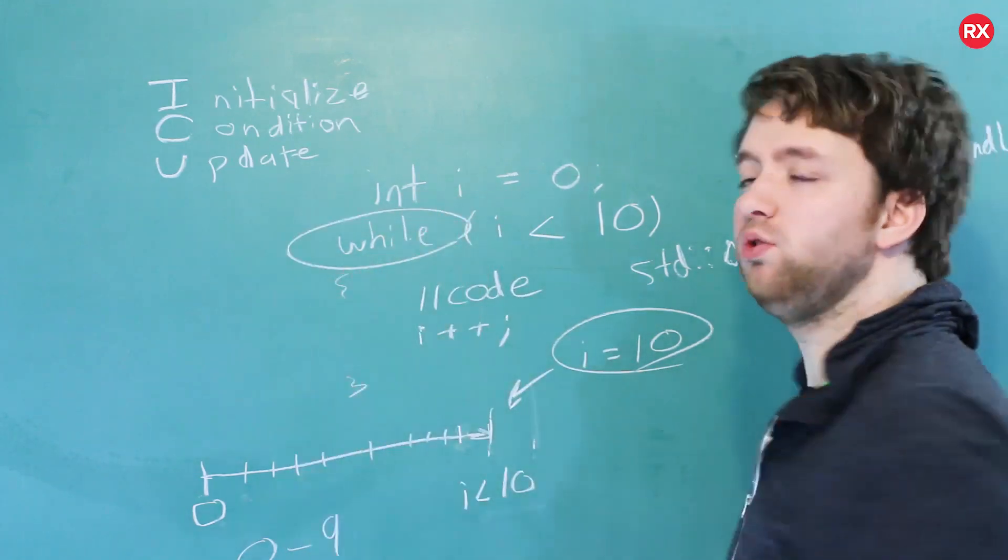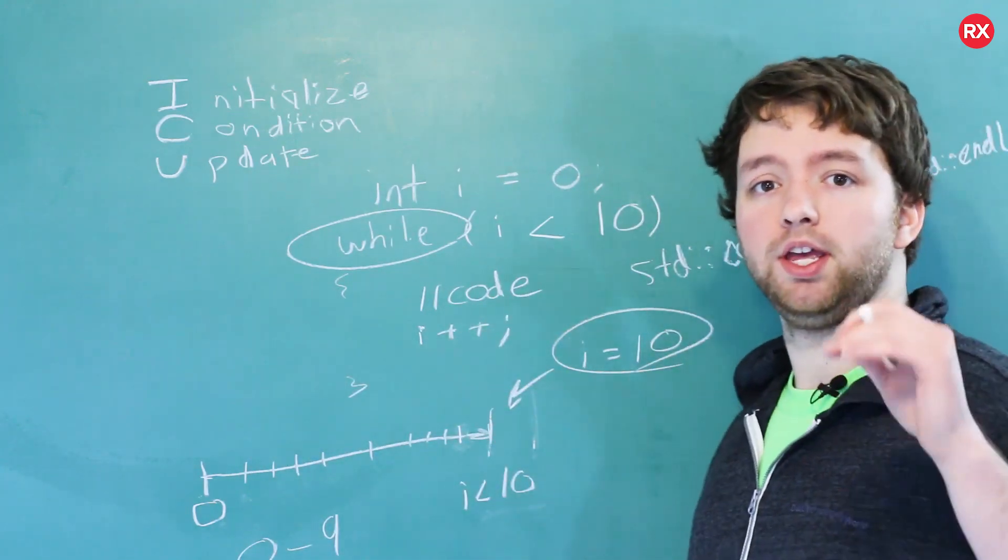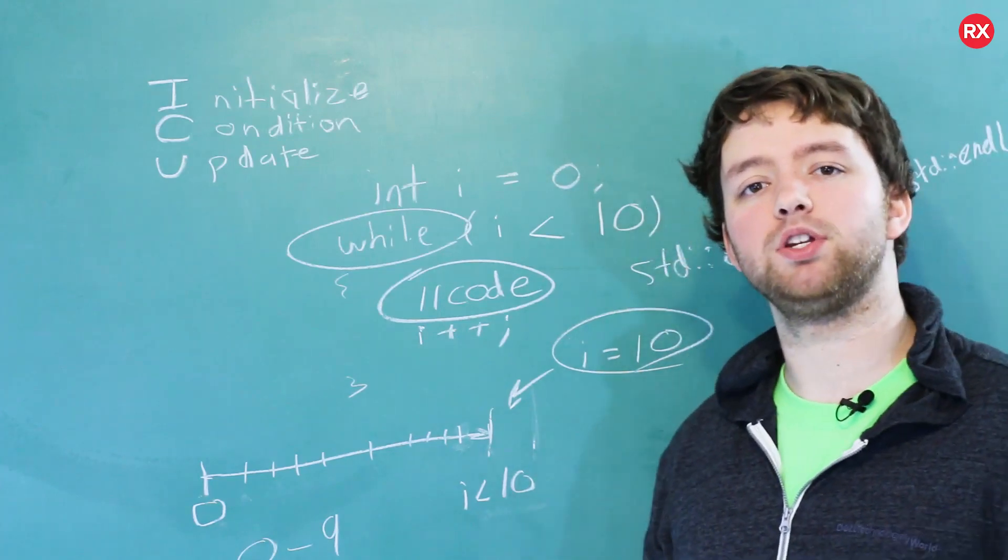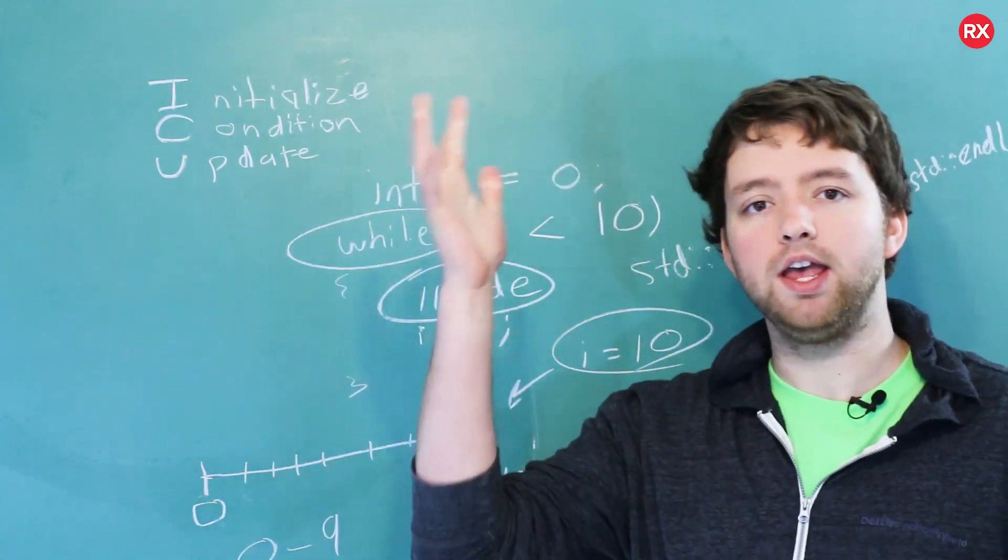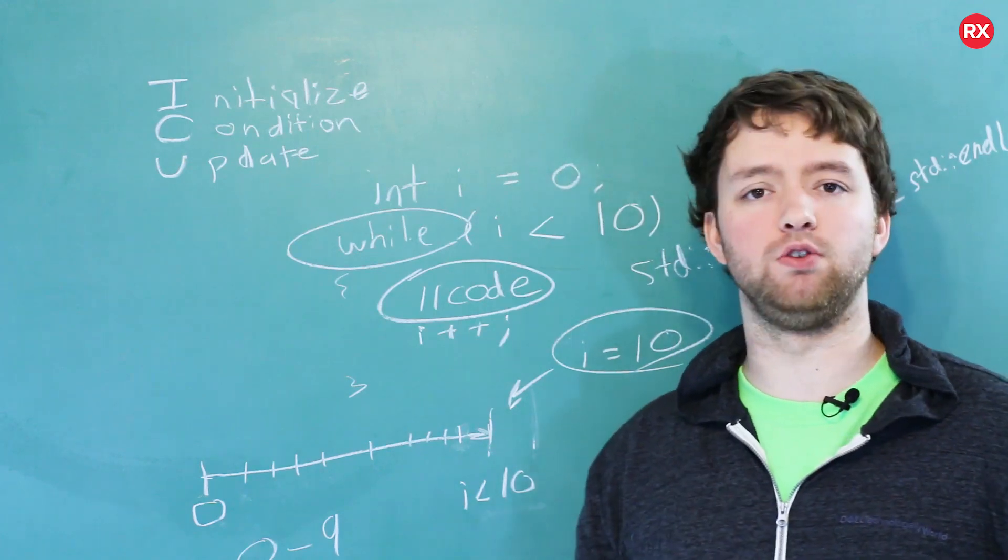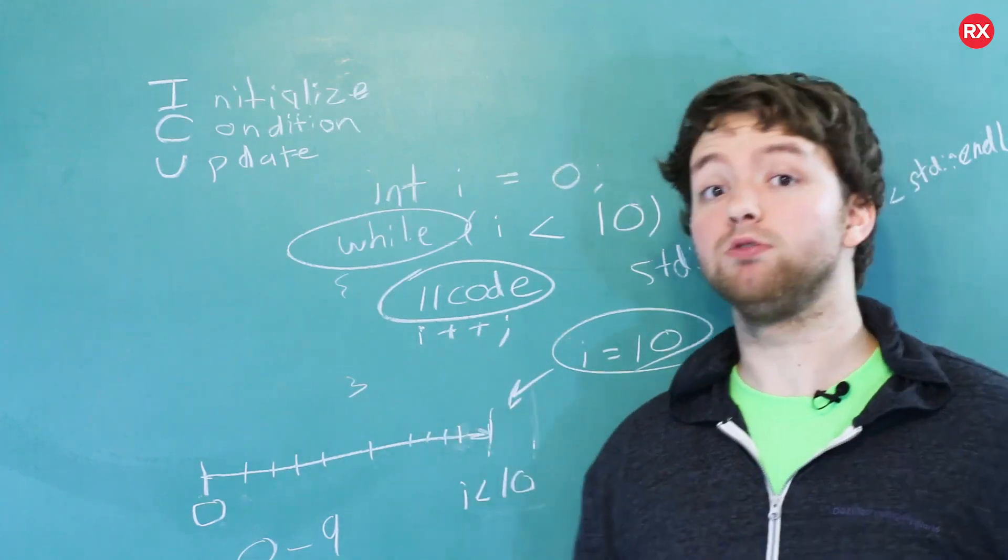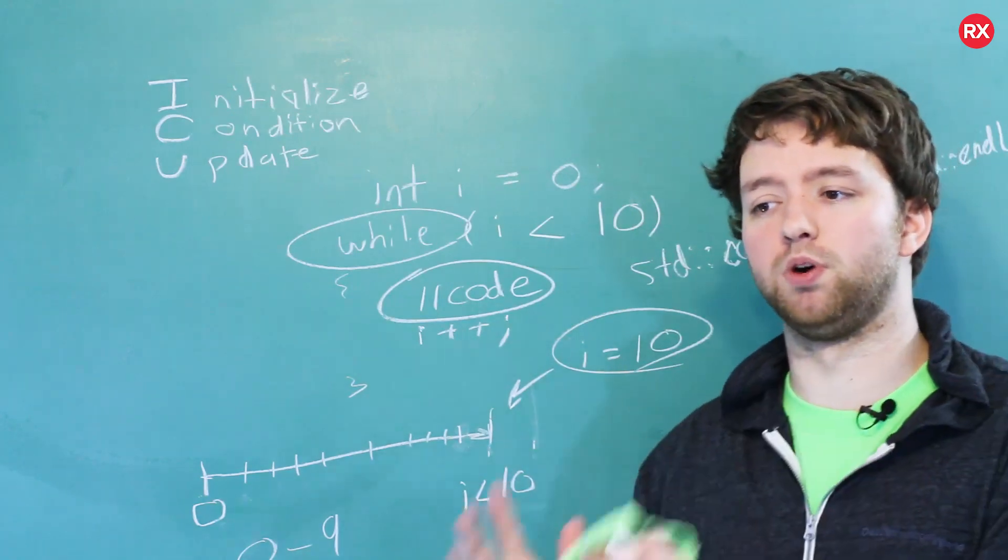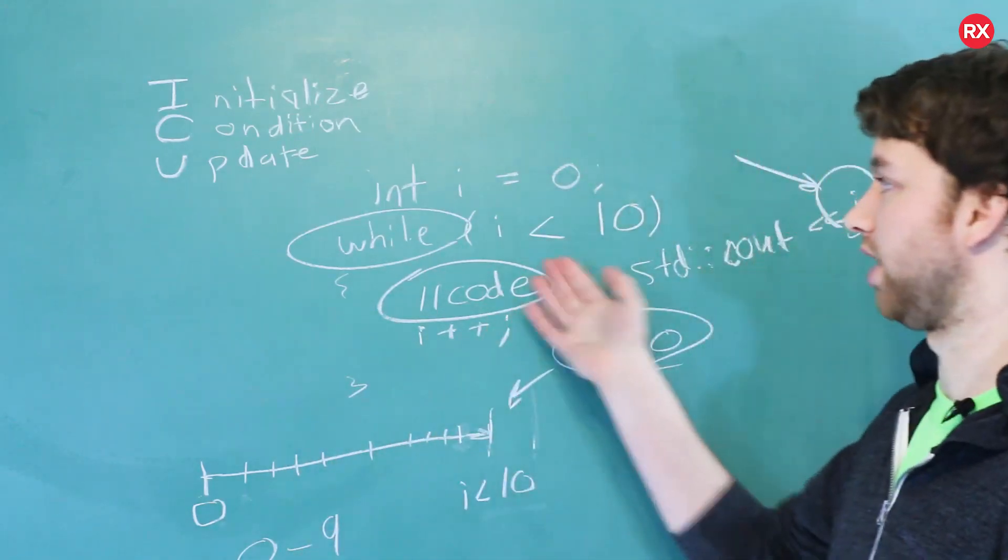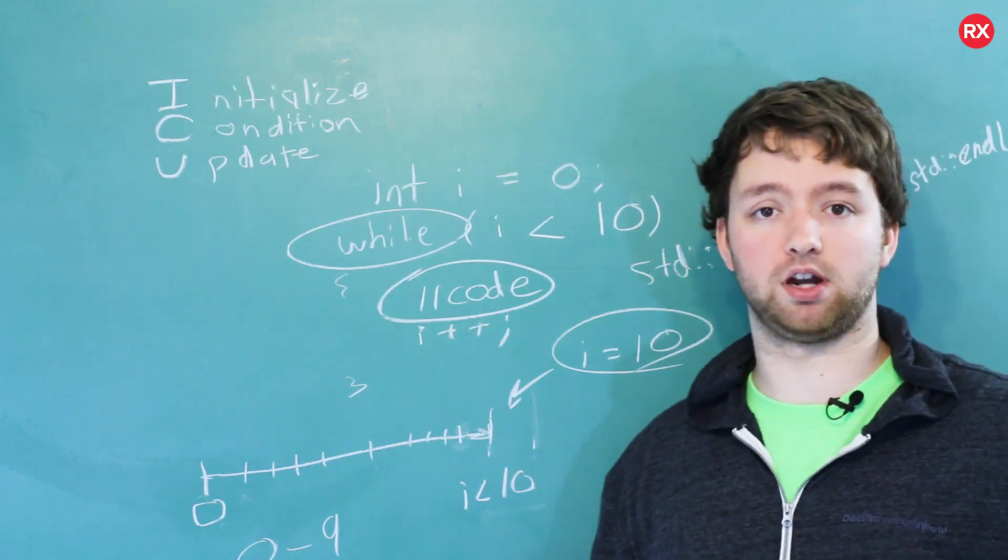So this is the while loop. There are two other loops you should know about, which is the do-while loop and the for loop. The difference between a while loop and a do-while loop is that the while loop, the code happens after the condition. For a do-while loop, it's going to execute at least once. So the code is going to be executed and then the condition will be checked. Generally you can use any of the loops to get the job done, but there's usually one that's more fitting. If you want to do something at least once, use a do-while loop. If you want to do it zero or more times, then use a while loop.